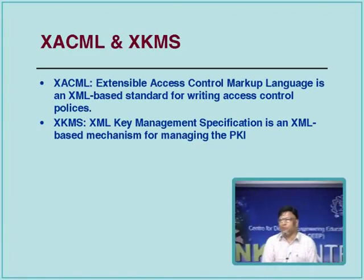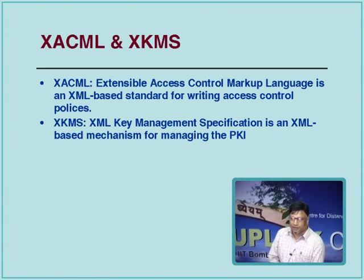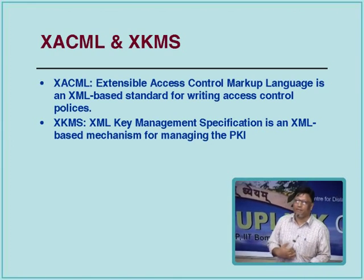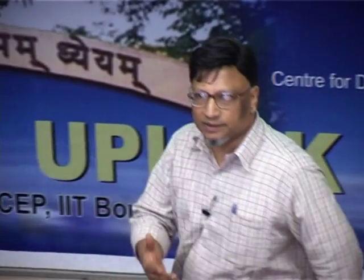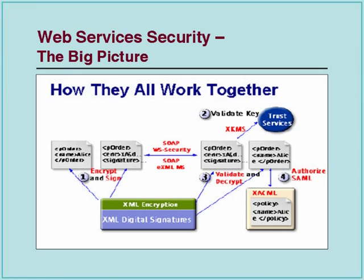Then there are standards used in conjunction: XACML and XKMS. XKMS is for key management - you want something more general than PKI. The base is WS-Security, which is normally supported on SOAP but can also be supported on plain HTTP. A final slide shows how you can use several of these together - a purchase order that is signed and partly encrypted using XML Encryption and XML Digital Signatures.